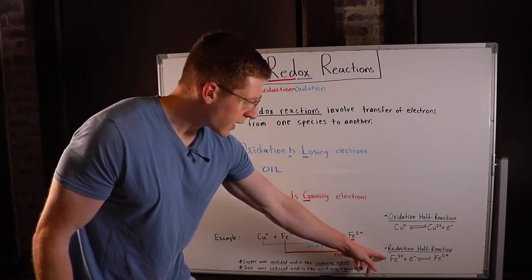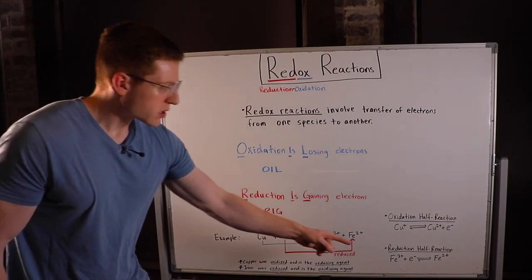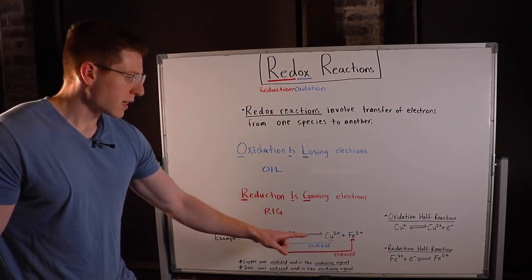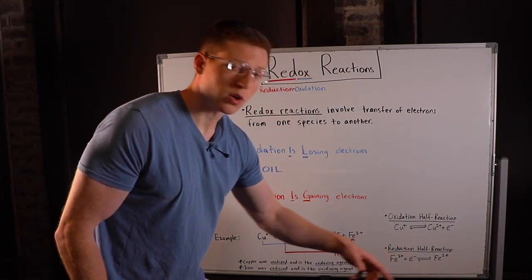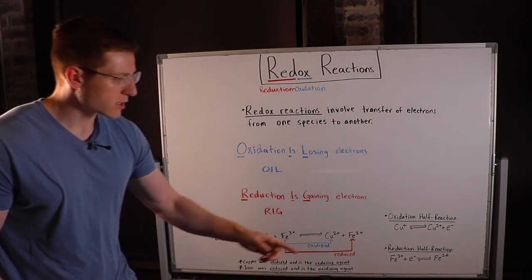Conversely, iron in the reduction half reaction, it started out Fe3+ and then gained an electron and its charge went down by one. So this is the reduction half reaction.